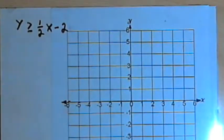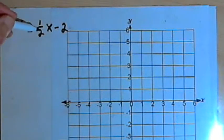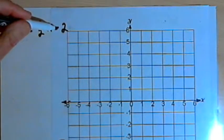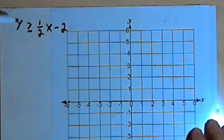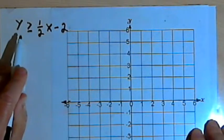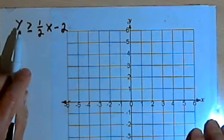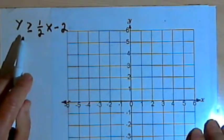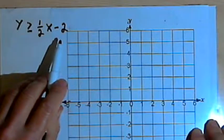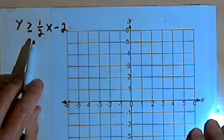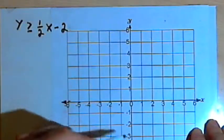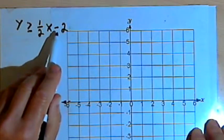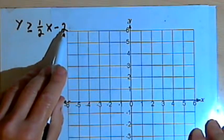So the first inequality is y is greater than or equal to one-half x minus 2. To start with, I'm going to treat this as if it's just an equation: y equals one-half x minus 2. And since this is in slope-intercept form, I can graph it fairly easily. I know the y-intercept, that's this minus 2, the negative 2 at the end of the equation.